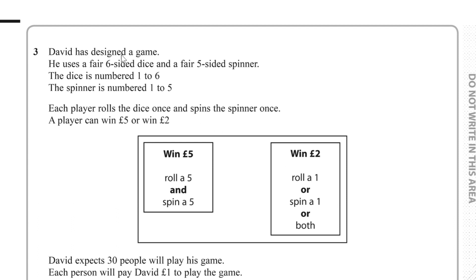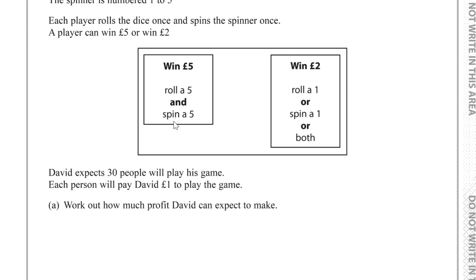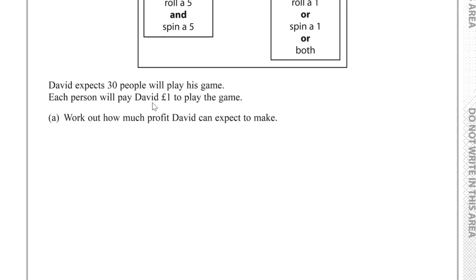Question 3. David has designed a game. He uses a fair 6-sided dice and a fair 5-sided spinner. The dice is numbered 1 to 6 and the spinner 1 to 5. Each player rolls the dice once and spins the spinner once. A player wins £5 if they roll a 5 and spin a 5, and wins £2 if they roll a 1 or spin a 1 or both. We can use a sample space diagram to show the winnings.